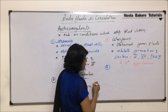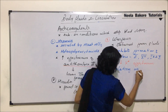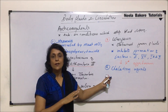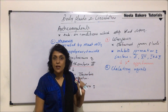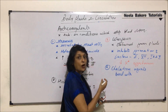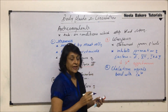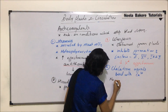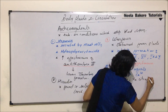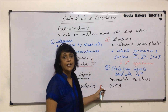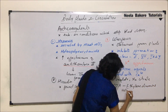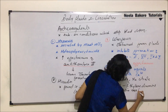Chelating agents are substances which can bind with metallic ions. Since calcium ions are essential for clotting among all 13 factors, chelating agents bind with calcium ions to prevent clotting. Examples of chelating agents include sodium oxalate, sodium citrate, and EDTA — whose full form is ethylenediaminetetraacetic acid. These are the commonly used chelating agents.